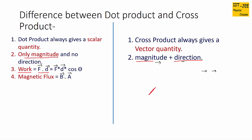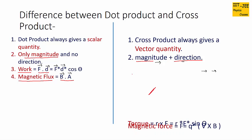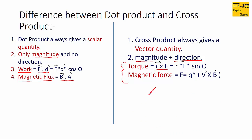Another example is the dot product of magnetic field B and area vector A, which gives magnetic flux — also a scalar quantity. For cross product examples: the cross product of radius vector R and force vector F gives torque, which is a vector quantity with magnitude and direction. Similarly, magnetic force F equals Q times V cross B, where the cross product of velocity vector V and magnetic field vector B gives the force vector.